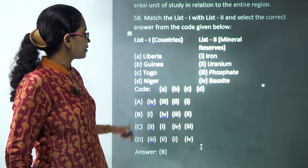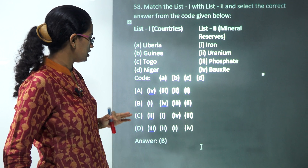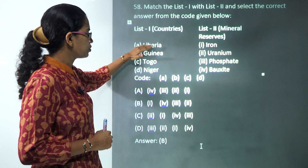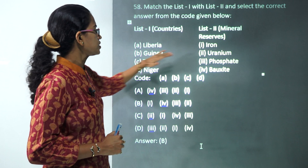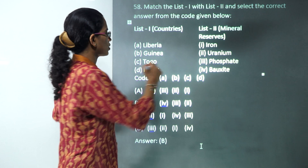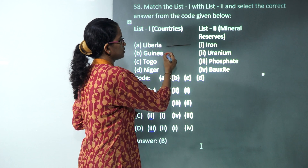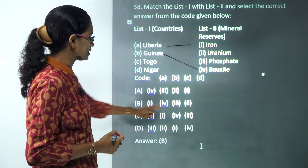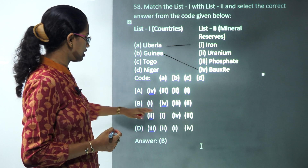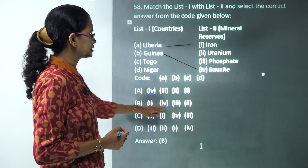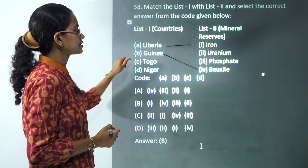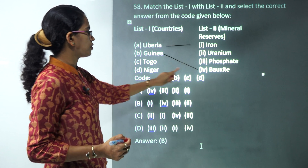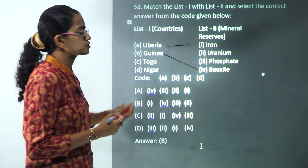The next question asks you to match the country with its mineral reserve. Liberia is known for iron reserves and Guinea is known for bauxite reserves. Since options 1 and 4 match these, choice B is the correct answer. Togo is known for phosphate and Niger is known for uranium deposits.